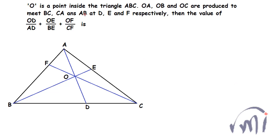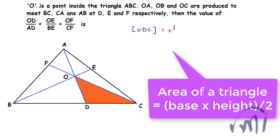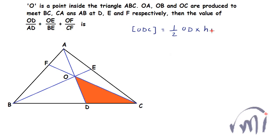So how to solve this? We are going to solve this using the areas of the triangles. So if I talk about the area of triangle ODC, the area of triangle ODC can be written as half of OD multiplied by the height of the triangle. Let me assume the height of this triangle is H1.